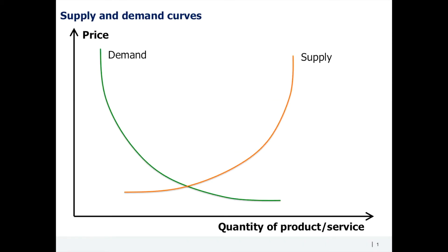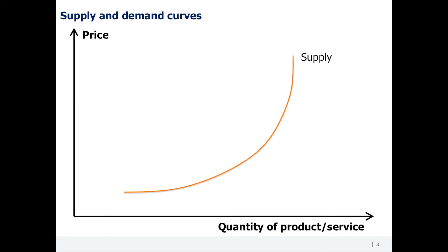As discussed previously, the demand curve slopes downwards — the higher the price, the lower the number of customers willing to purchase the product or service. The supply curve slopes upwards, as companies are interested in higher prices and are ready to offer more to the market and take more commercial risks if the price goes up.